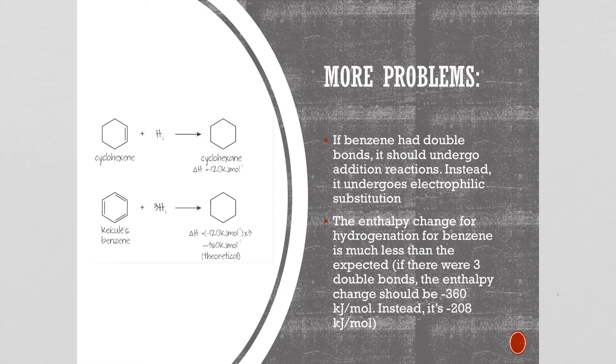There are still more problems with Kekule's model. If benzene had double bonds it should undergo addition reactions but instead of undergoing addition reactions it undergoes electrophilic substitution. In his theory we should have been able to add three hydrogens across those double bonds to make cyclohexane and that's not what happens. And the enthalpy change for the hydrogenation for benzene is much less than the expected value. If there were three double bonds the enthalpy change should be negative 360 kilojoules per mole and instead it's only negative 208 kilojoules per mole.